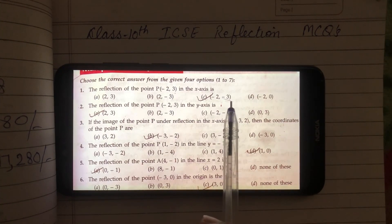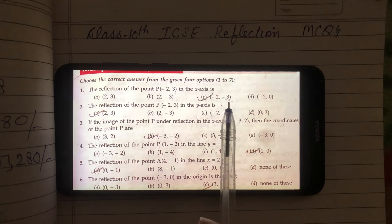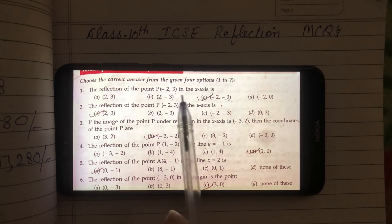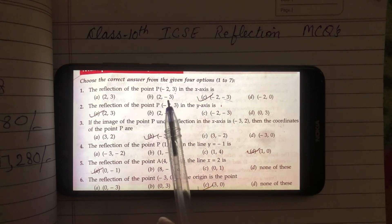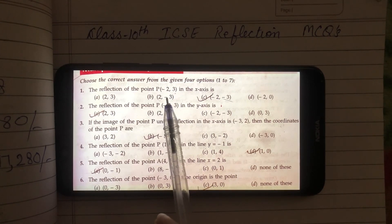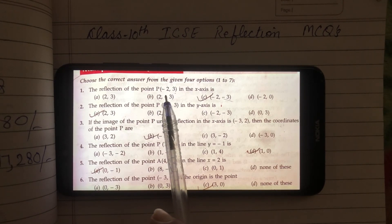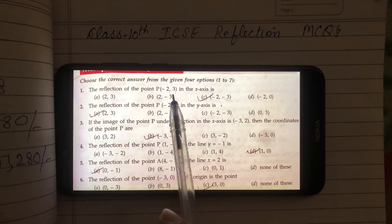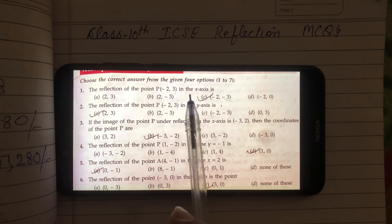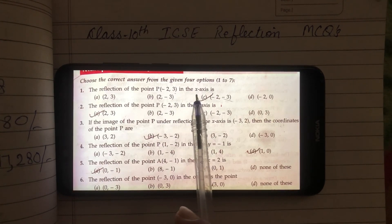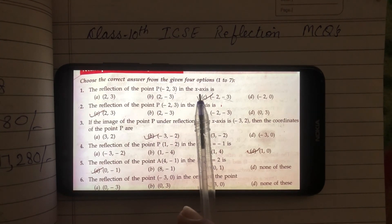Minus 2, minus 3 is our correct answer. Ab mein aapko graph paper pe bataati hoon — kyun X-coordinate ka sign nahin change ho raha, aur Y-coordinate ka kyun change ho raha hai, jab reflection in the X-axis ho rahi ho.